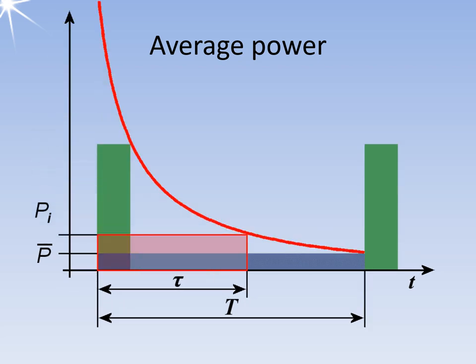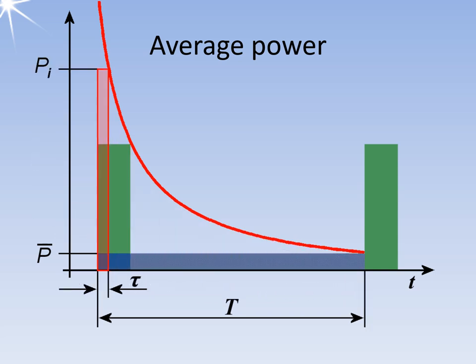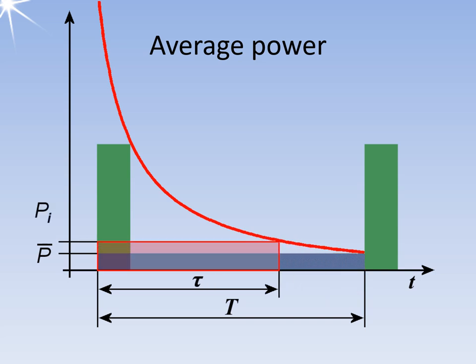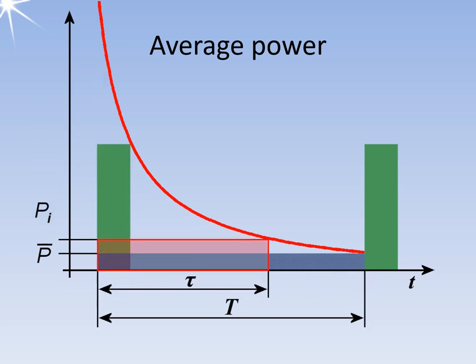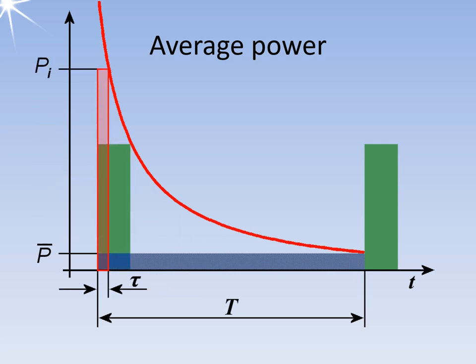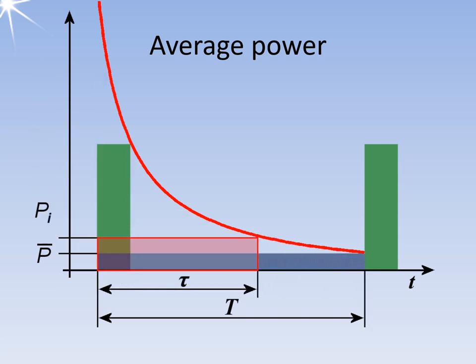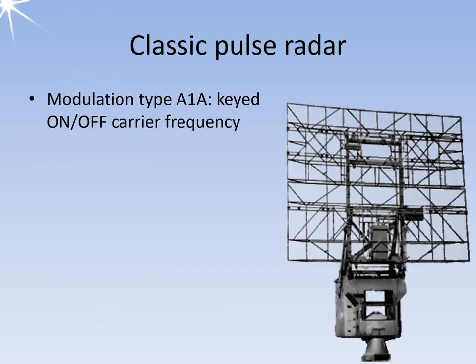The duty cycle can take on a range of different values. On the left side of the animation, we have the classic pulse radar that uses extremely short transmission pulses. On the right side, we have continuous wave radar. All values in between these two extremes relate to pulse radar that utilizes intrapulse modulation and pulse compression. The modulation type used in classic pulse radar, such as the Freya radar from the Second World War, is like Morse telegraphy, which involves a keyed carrier. This type of modulation is known as A1 among radio enthusiasts.